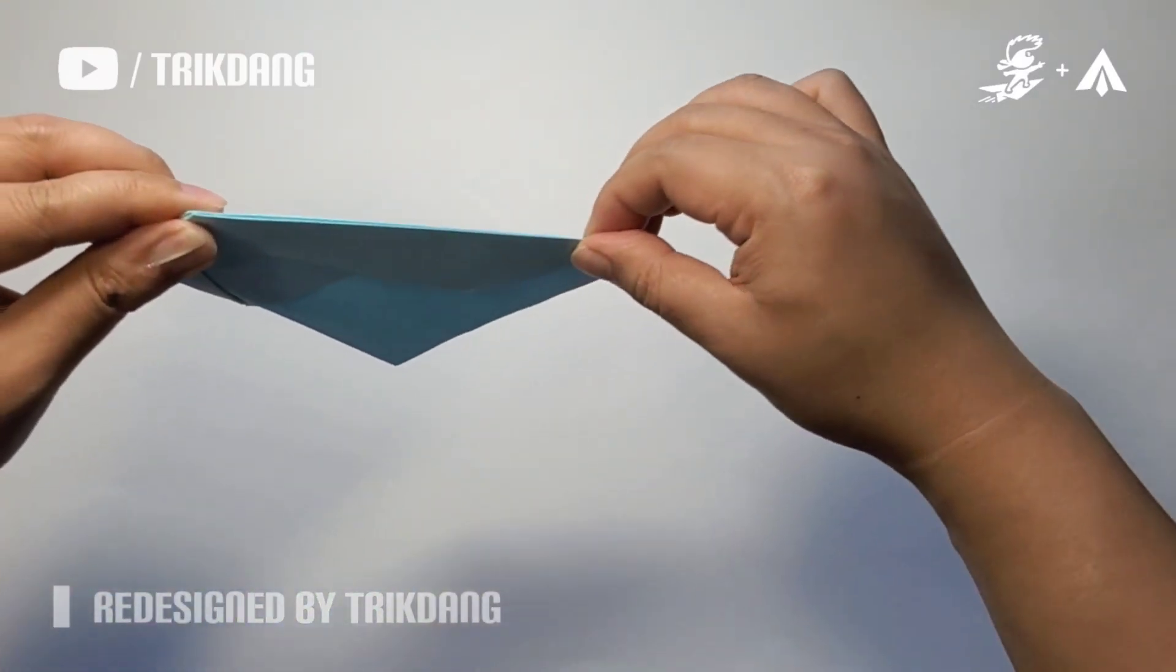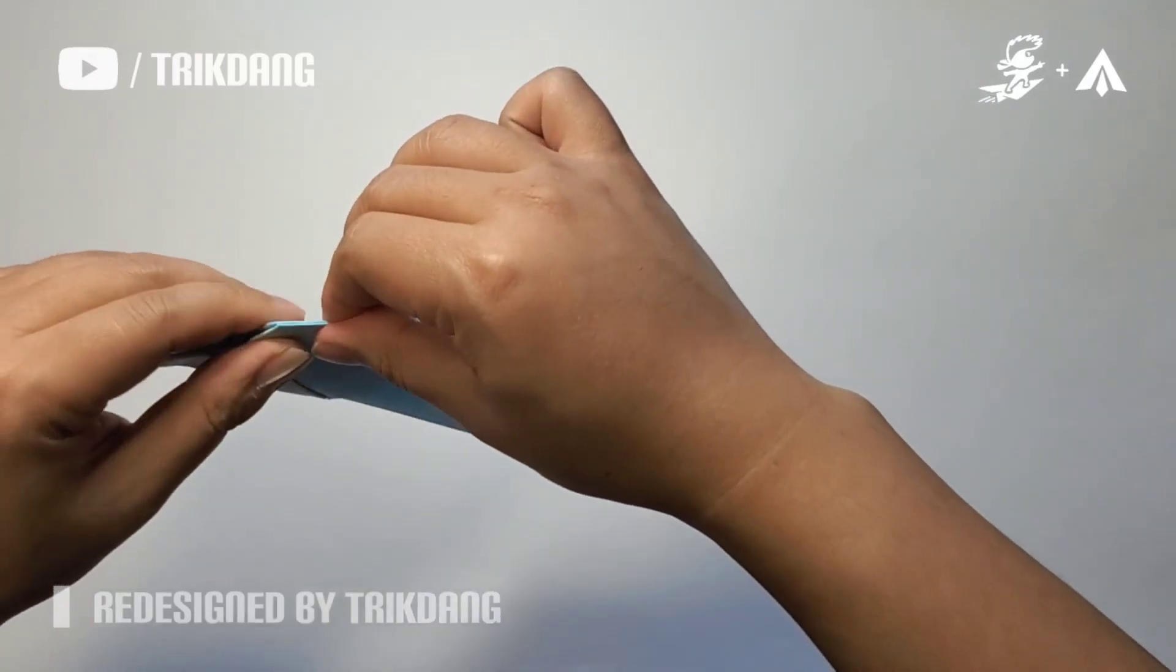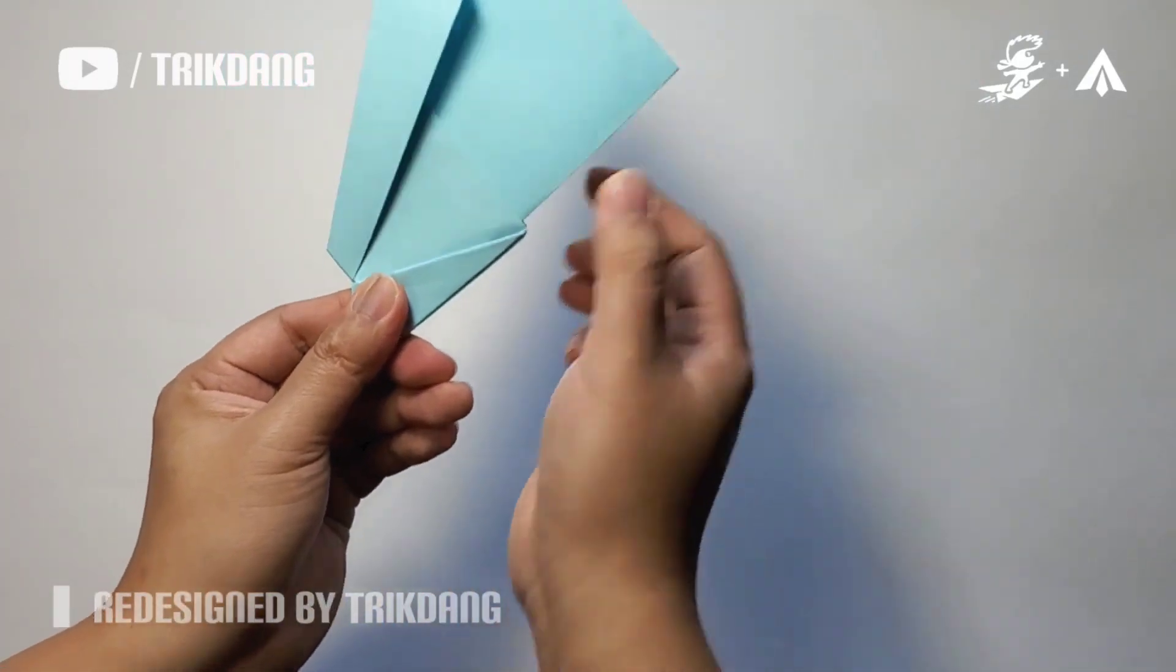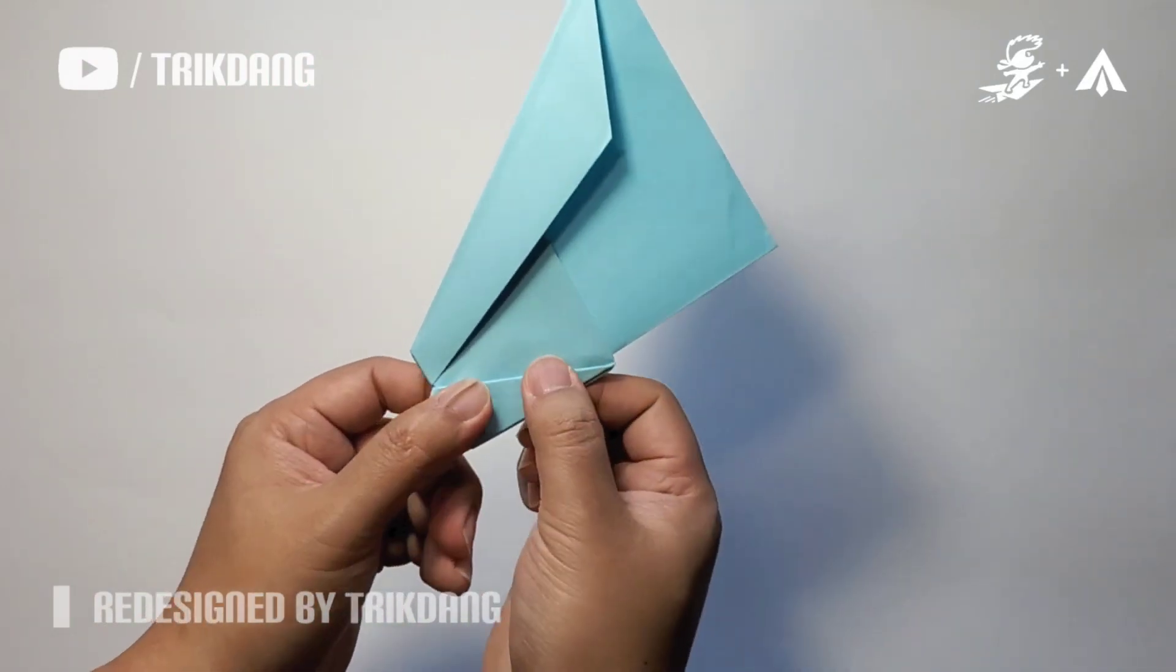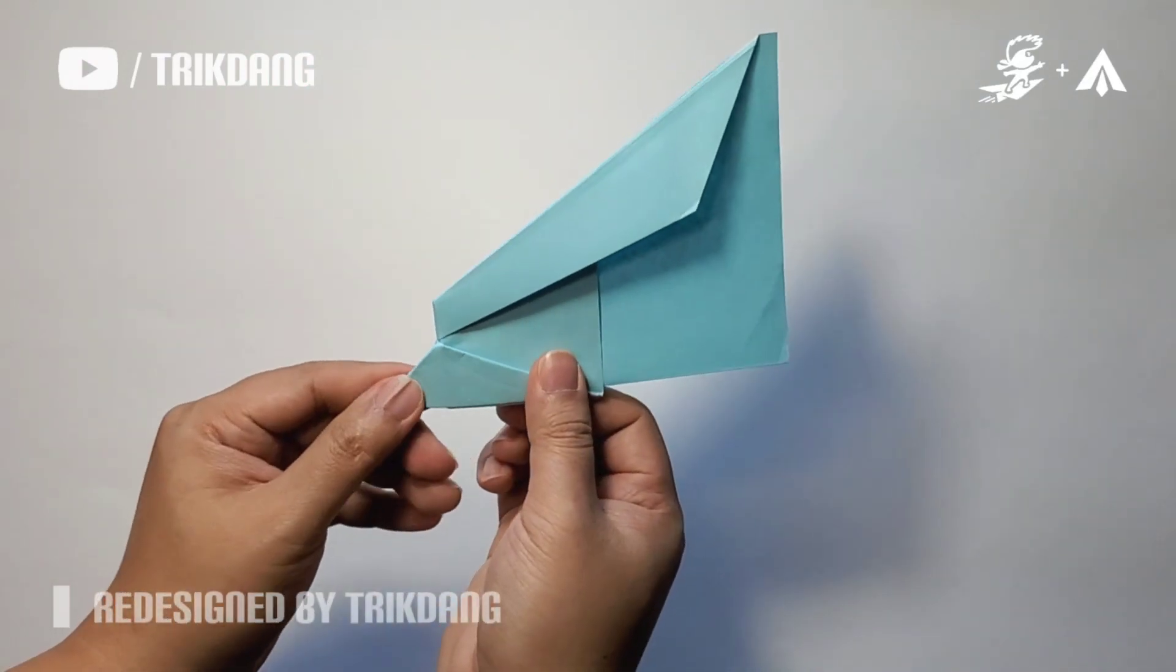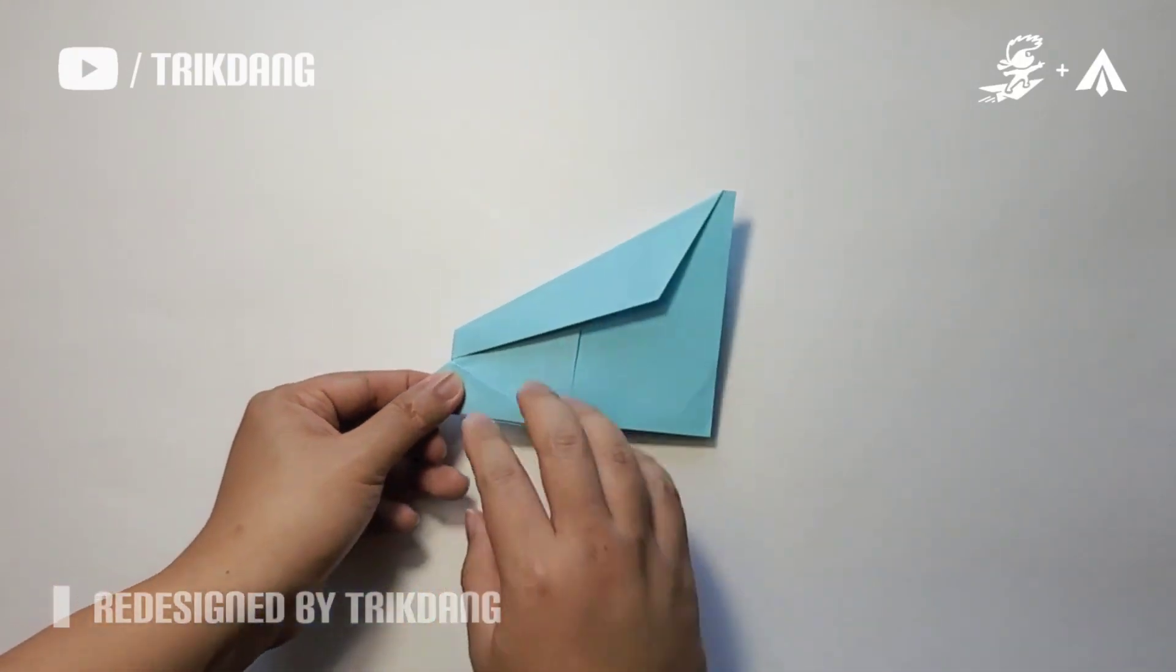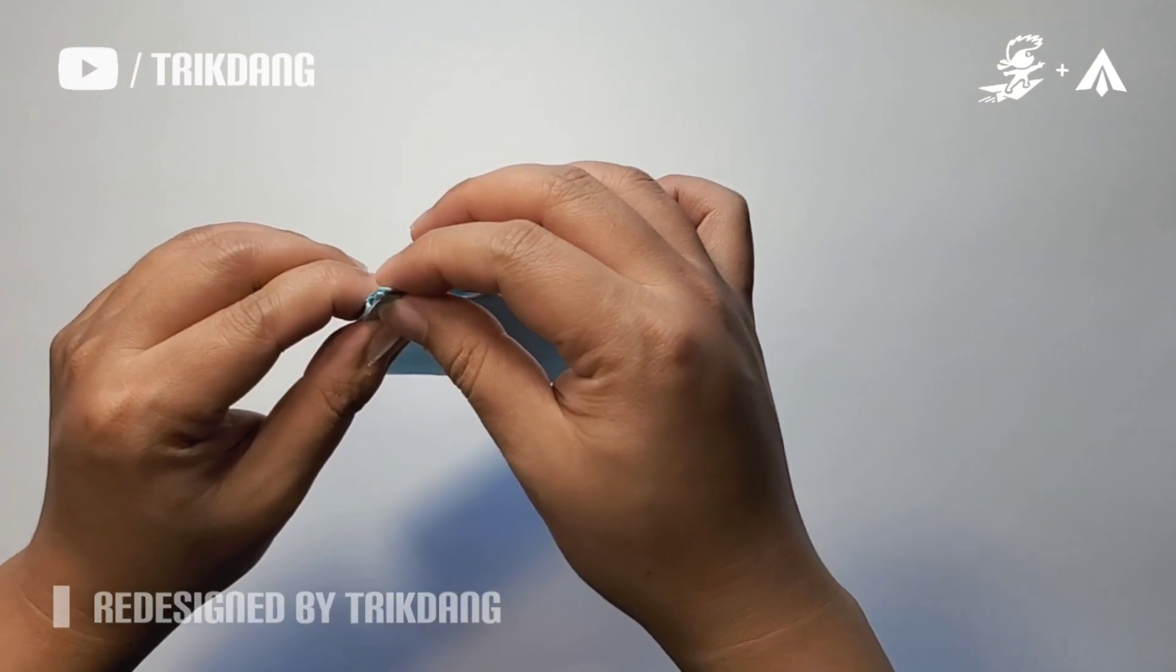By folding the paper plane this way, you enhance the wings of the plane. That means the wings are very strong and can last long when you throw it indoors or outside. This is a very strong head here, the nose is very strong. But be careful because it's dangerous.